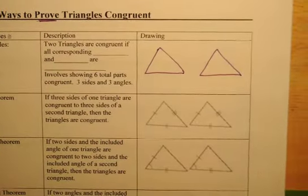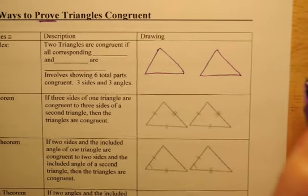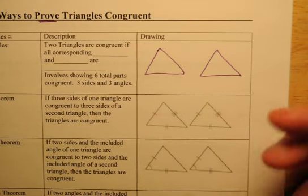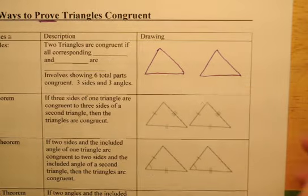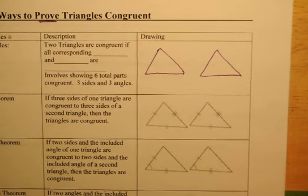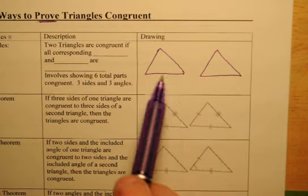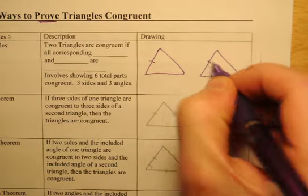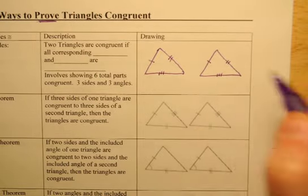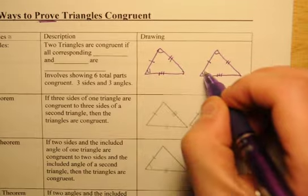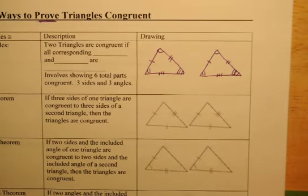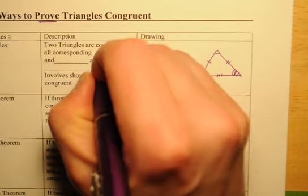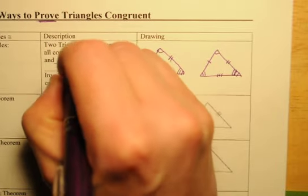So, are these two triangles congruent? Well, they do look congruent, don't they? But just because they look a certain way doesn't make them what they seem to be. We don't want to judge — we want to look for evidence and make conclusions. The first way to prove triangles are congruent is by showing all three sides are the same length and all three angles are the same measure. That's six things. Two triangles are congruent if all corresponding sides and angles are congruent.